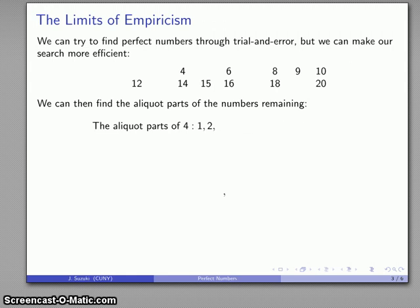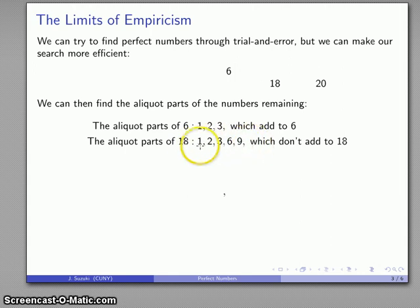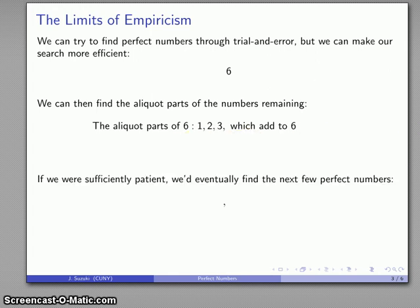We can find the aliquot parts of the remaining numbers. 4 has aliquot parts 1 and 2, so those don't add to 4, they're less than 4, so 4 is deficient. 6, we already knew it was perfect. 8, with aliquot parts 1, 2, and 4, is deficient. 9, deficient. 10, also deficient. 12, with aliquot parts 1, 2, 3, 4, and 6, is abundant. 14, not perfect. 15, not perfect. 16, not perfect. 18, not perfect. Here's something to note, it is an abundant number, the second abundant number we've come across. And then 20, also an abundant number, third abundant number. So in our numbers from 1 through 20, the only perfect number is 6.